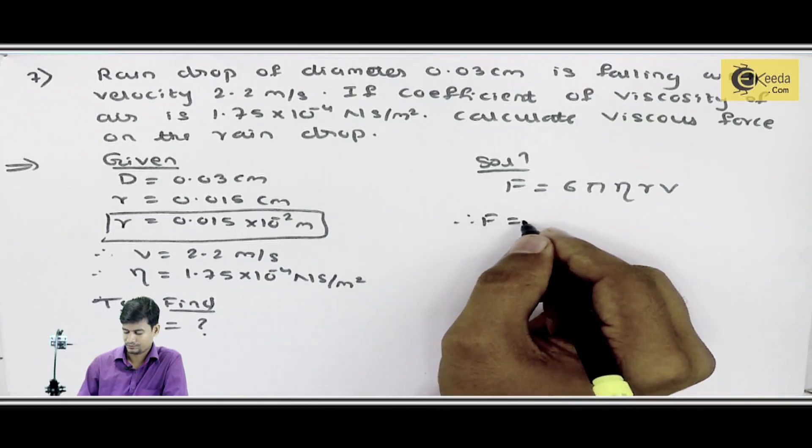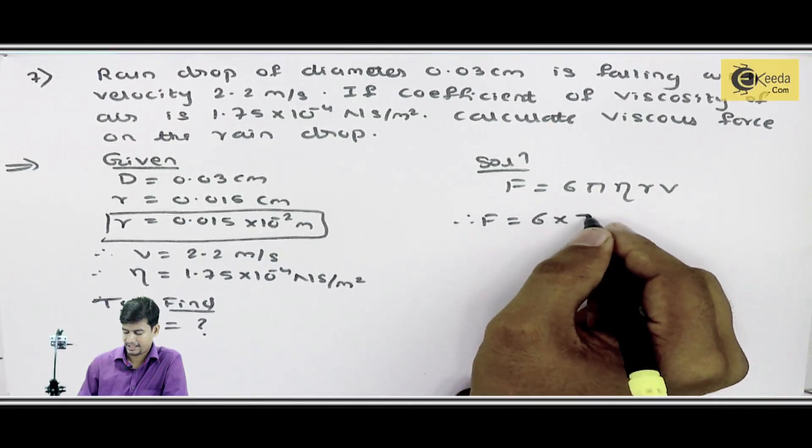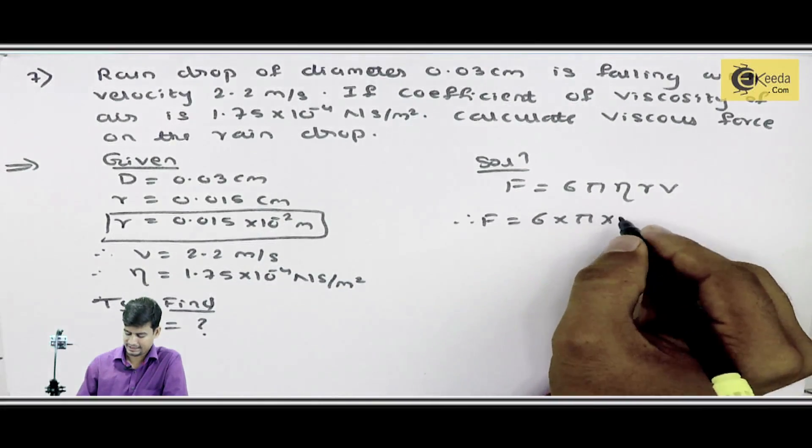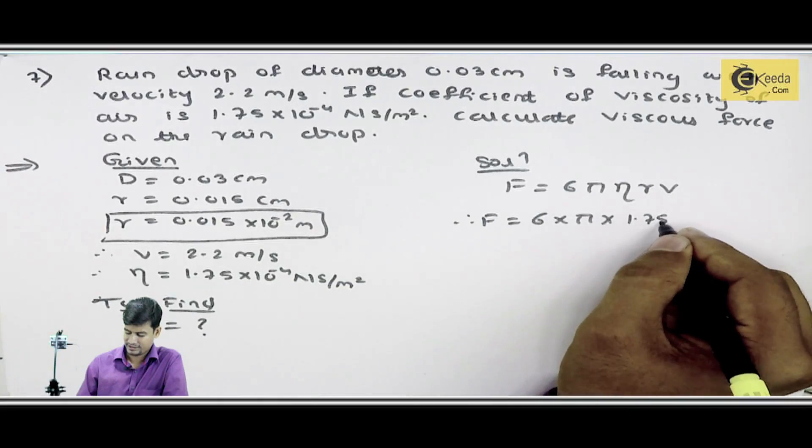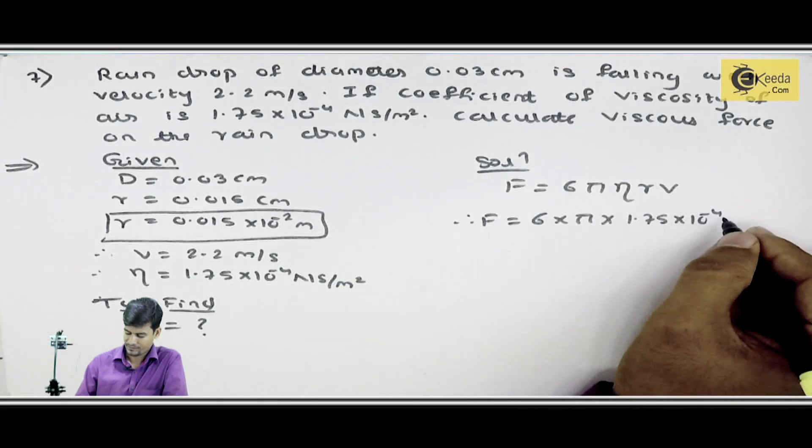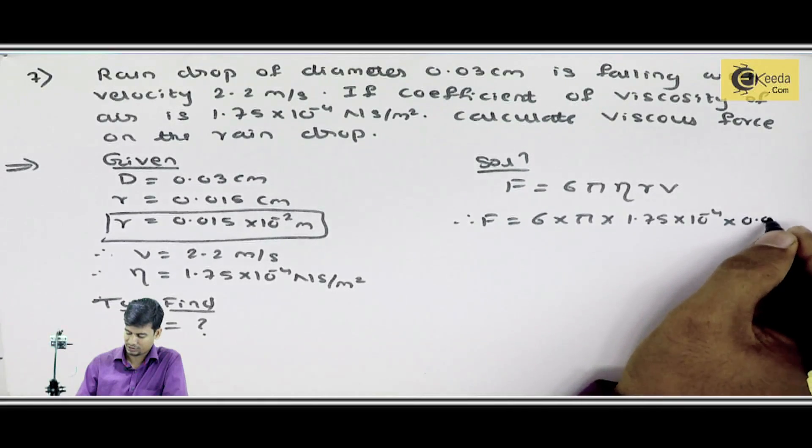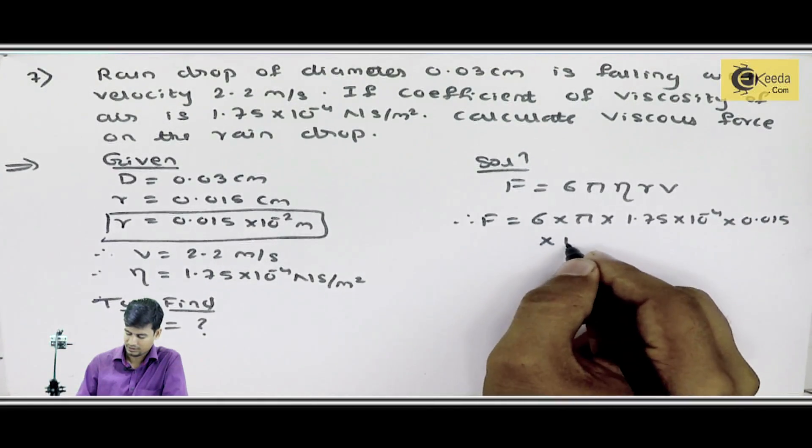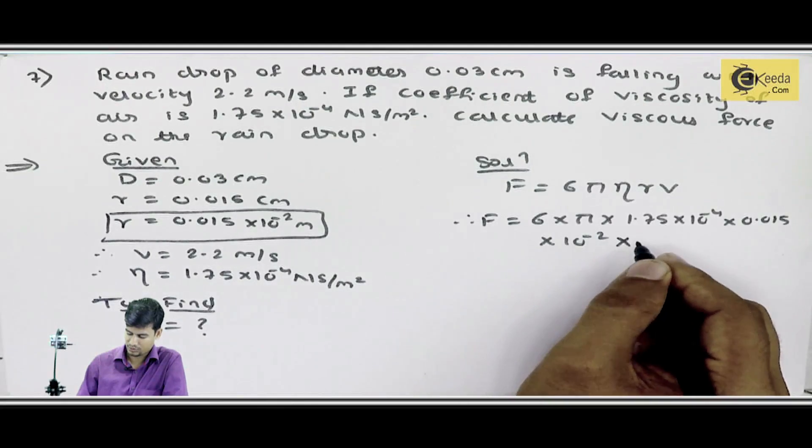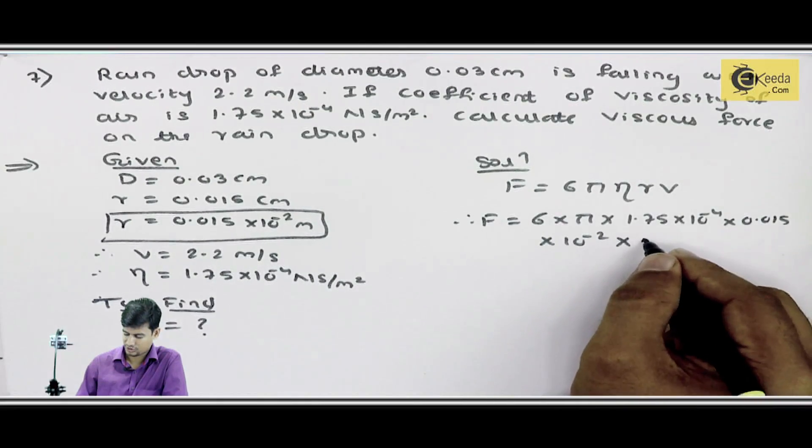Toh, substitute kar djeta hoon. 6 into pi into eta. Eta kitna given hai? 1.75 into 10 raise to power minus 4. And radius, radius something mujhe diya hai 0.015 into 10 raise to power minus 2 into. V di hai mujhe terminal velocity 2.2.